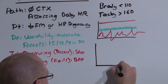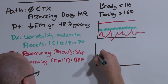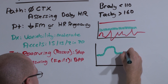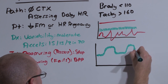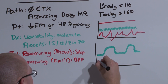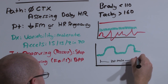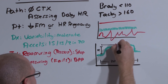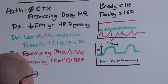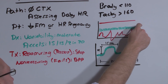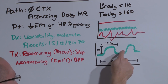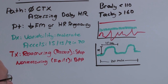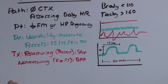For accelerations, you're looking for an elevation in beats per minute by 15, lasting 15 seconds each, occurring twice in 20 minutes. In a 20-minute time span, you should see at least 2 accelerations that increase by 15 beats per minute and last 15 seconds long. If the NST shows both moderate variability and at least 2 accelerations in 20 minutes, it is reassuring. If it fails either of these, you move on to the biophysical profile.